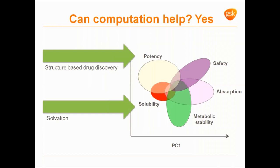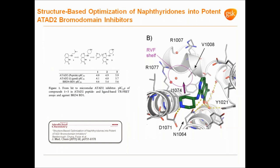So where can computational chemistry help? I'm going to talk about two aspects where we clearly feel that we can and do impact, and then we'll go on to some harder problems. Let's start with structure-based drug discovery, which is what traditionally people associate with computational chemistry. Here's an example published by the GSK Stevenage group — the structure-based optimisation of some ATAD2 bromodomain inhibitors.